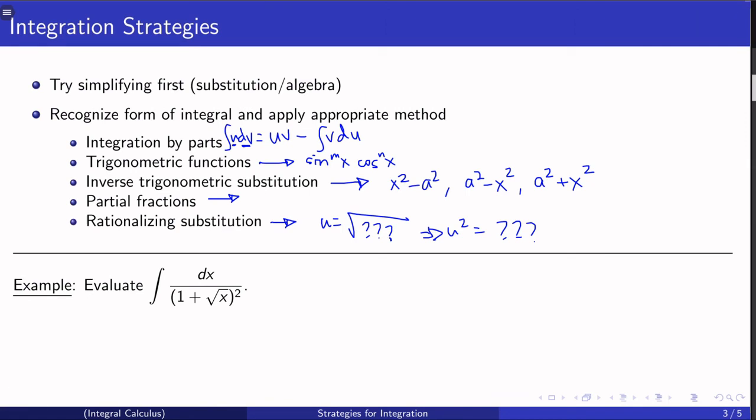dx over 1 plus the square root of x squared. Right? So right now it's not entirely obvious what substitution or what method we have to use here. But maybe you can just set u to be 1 plus square root of x. So it's kind of like a rationalizing substitution here. But you just have a plus 1 on the right. That's fine. I can write this as u minus 1 equals root x. Square both sides. And then take the derivative.